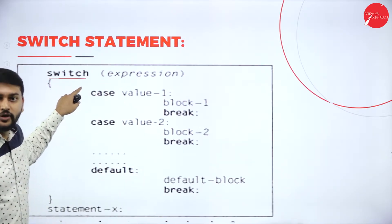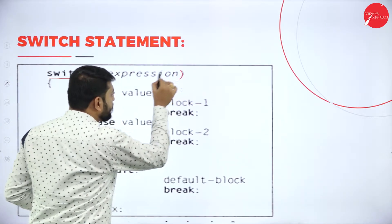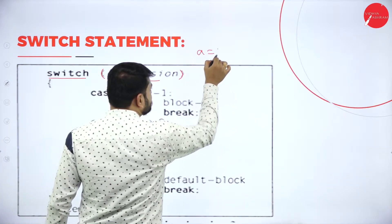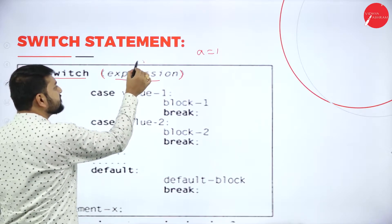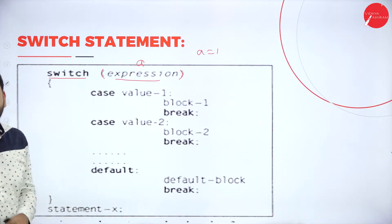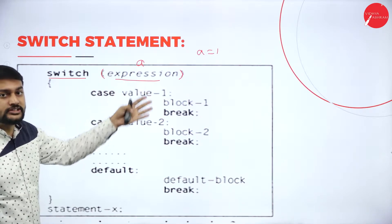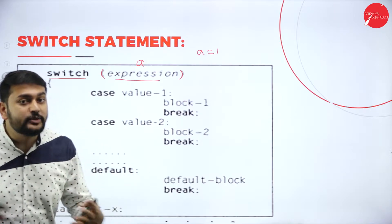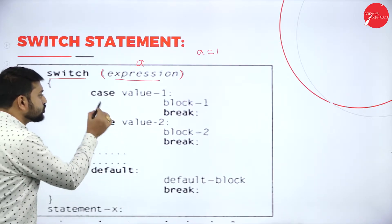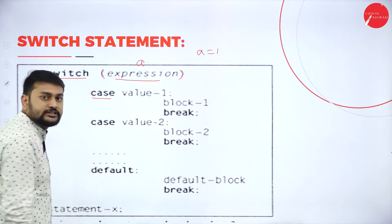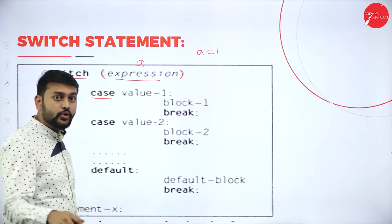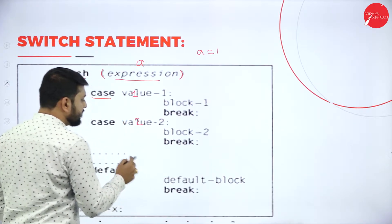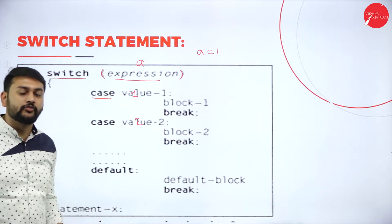I have the keyword switch and the parenthesis here — they have given 'expression'. What exactly is expression? Let's say A is equal to 1, so I will be passing this A as a parameter to this switch. I can have multiple cases. I have the keyword 'case', and after that I have to give the value — for example case 1, case 2, case 3, case 4, case 5. Like that, I can give the value.